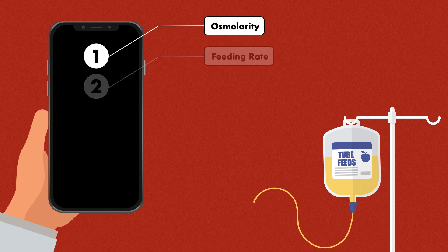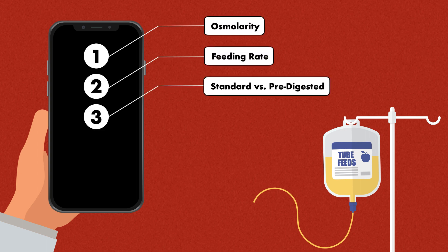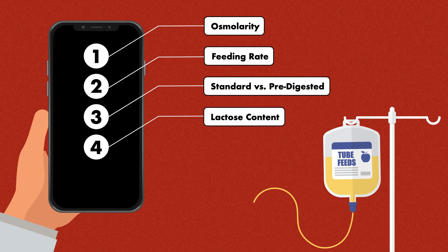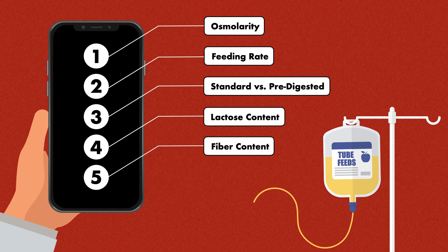Osmolarity. The feeding rate. Use of a standard formula instead of a predigested formula. The lactose content of the formula. And the fiber content of the formula. We're going to take a look at each of these, starting with osmolarity.